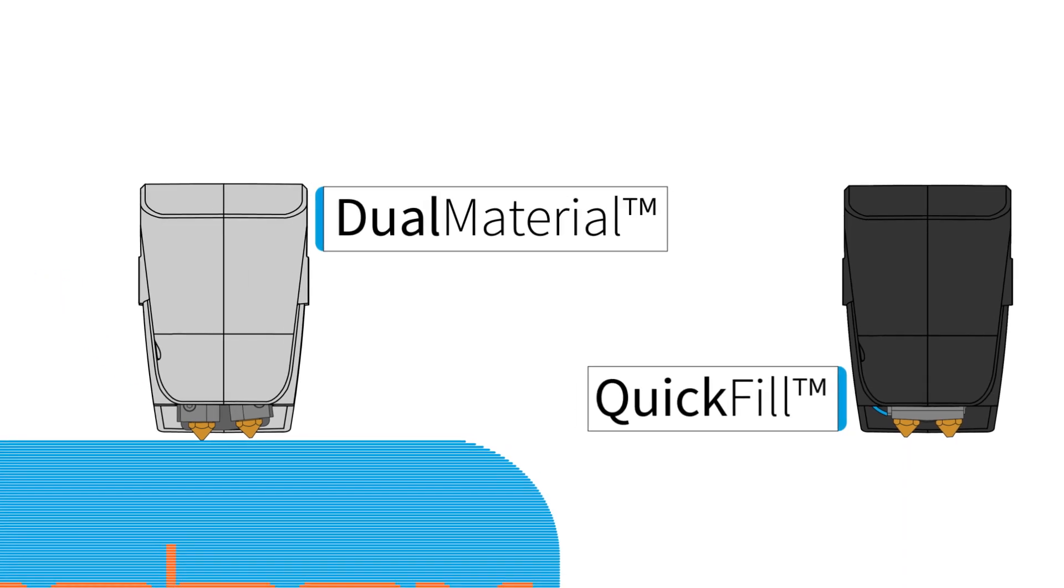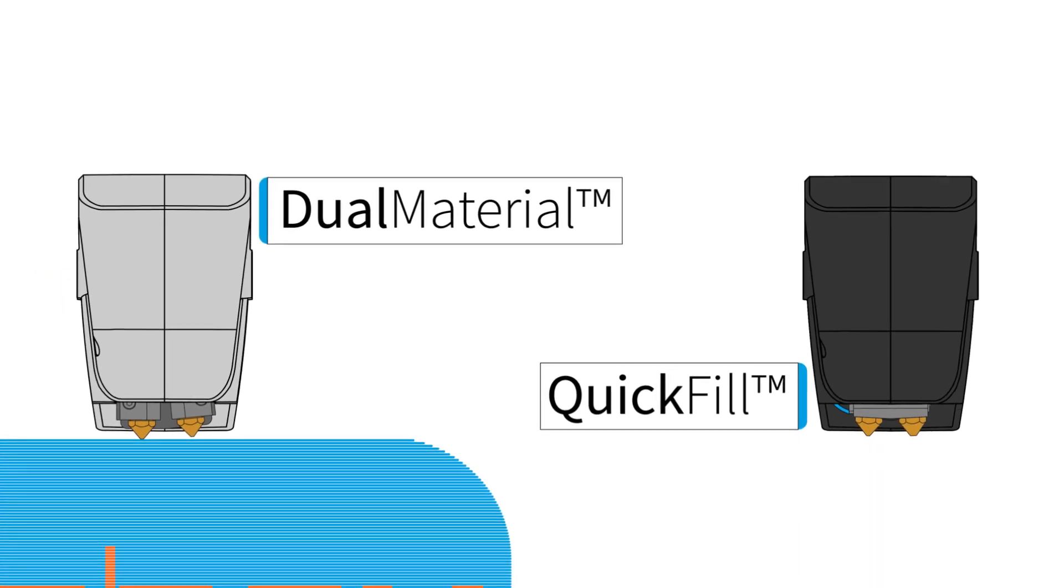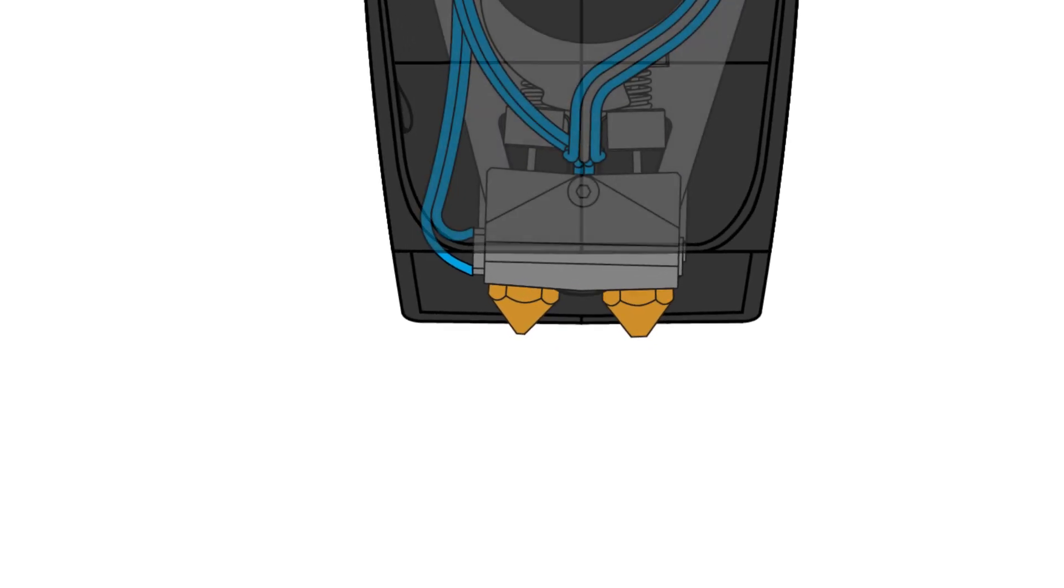The single material head is a quick change head compatible with Robox Dual. It has two nozzles, both of these are fed by the same material.